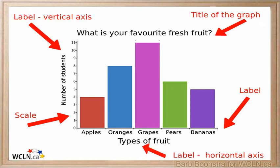To review: a graph is always labeled with a title. The horizontal and vertical axes are labeled, and the data is labeled on each axis. You can see there are five labels required on a bar graph.